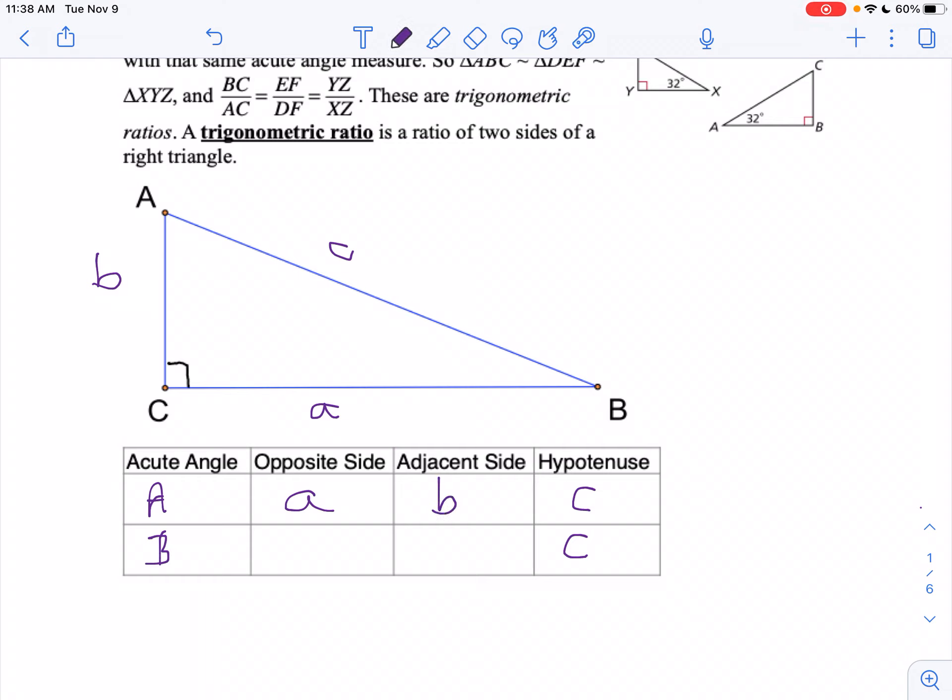Then if I look at angle B, what's opposite angle B? Well, that's side b. And what's adjacent to angle B? Well, that'll be side a because it's next to.